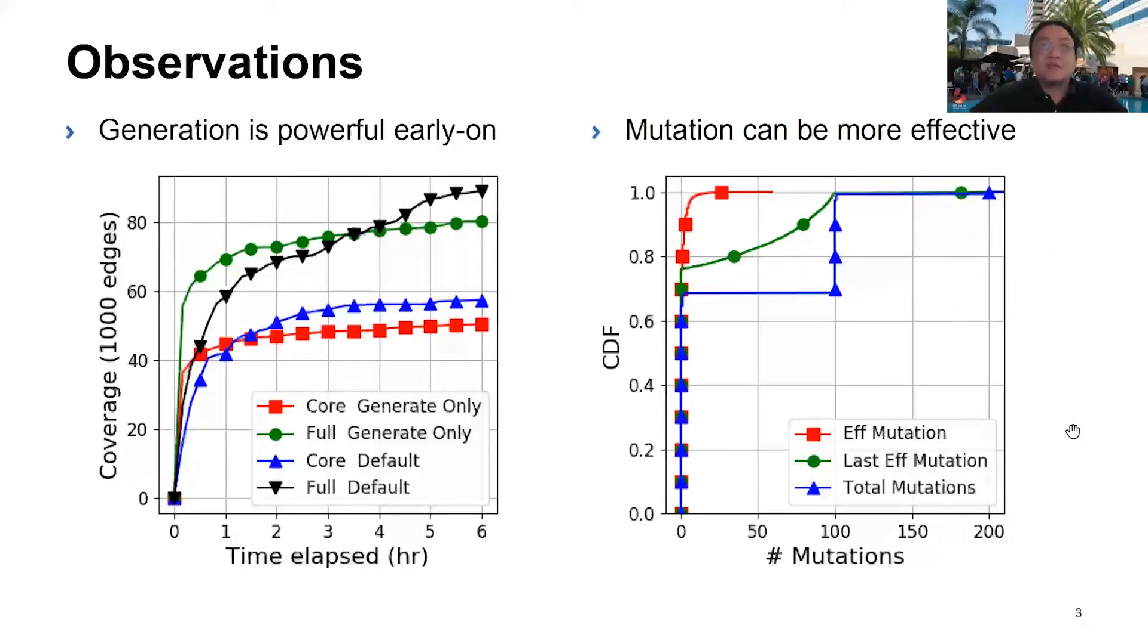Syzkaller has its fuzzing strategies hard-coded. Problem is, they might not fit all situations. For example, Syzkaller gives triage highest priority, then mutation, then generation. However, if we start Syzkaller from scratch, we actually found that generation is quite powerful early on for about one to three hours depending on how much kernel is being fuzzed. Looking at the left figure.